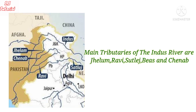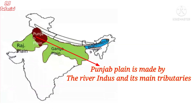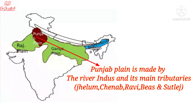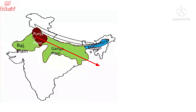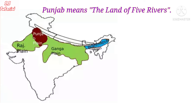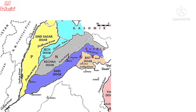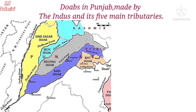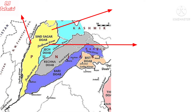The main tributaries of the Indus river are the Jhelum river, Chenab river, Ravi river, Beas river, and Satlej river. The Punjab Plain is made by the Indus river and its five major tributaries. The word Punjab means the land of five rivers. The Indus and its tributaries have created five well-known doabs in the Punjab Plain.